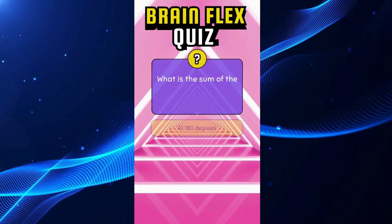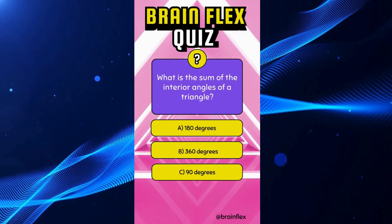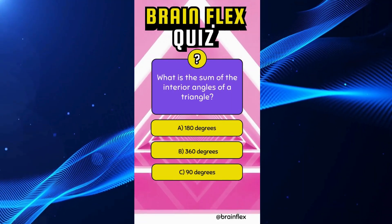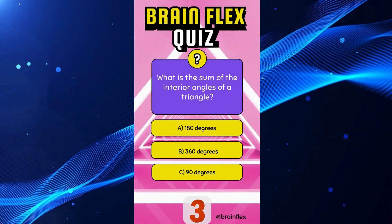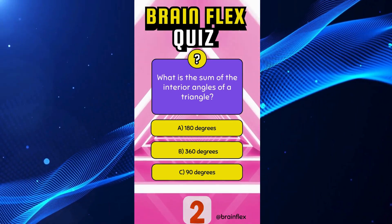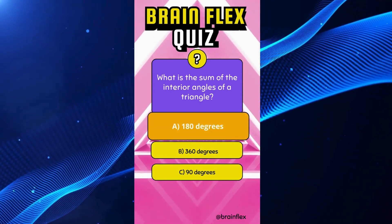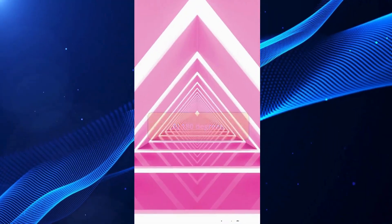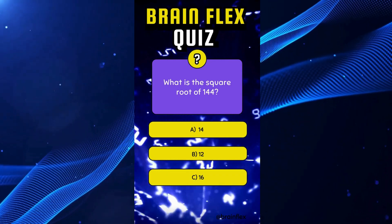What is the sum of the interior angles of a triangle? What is the square root of 144?